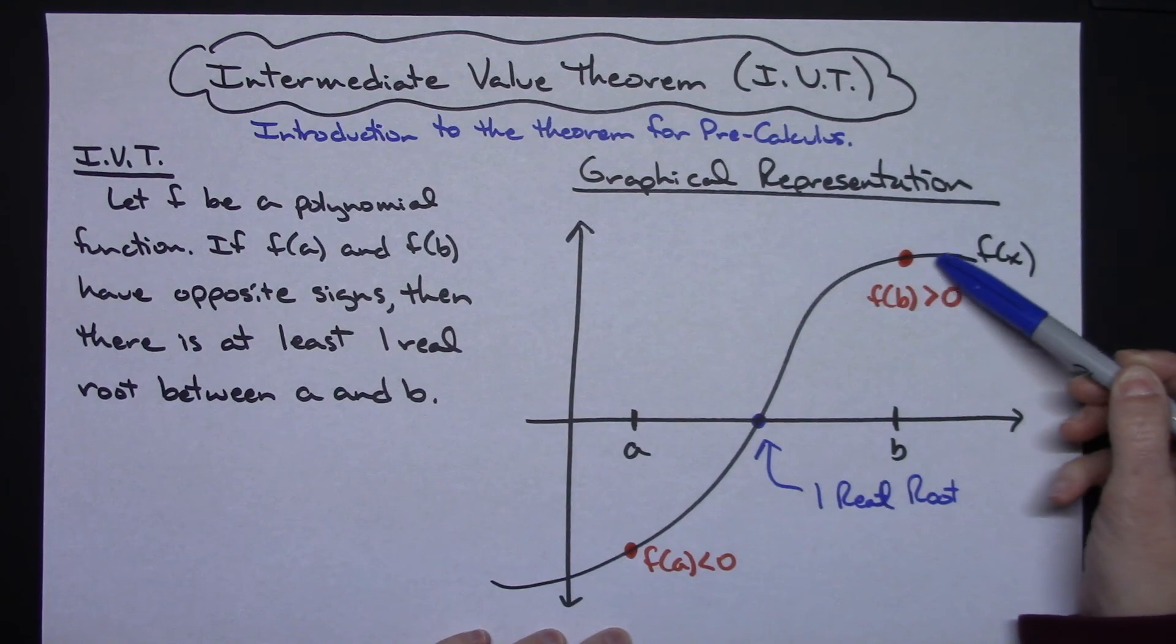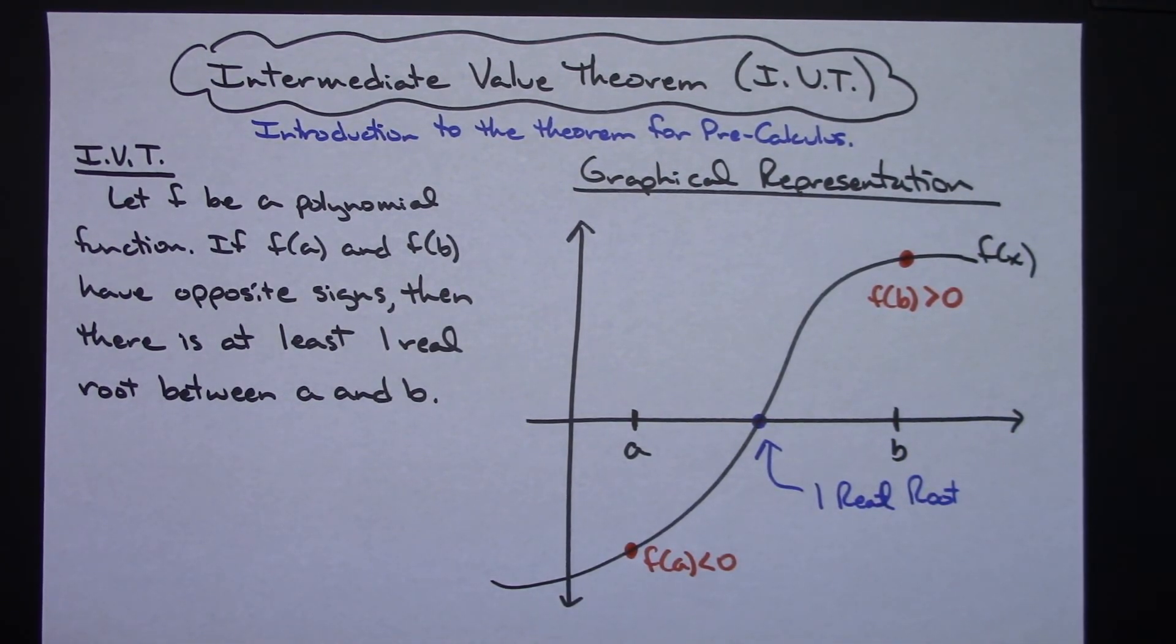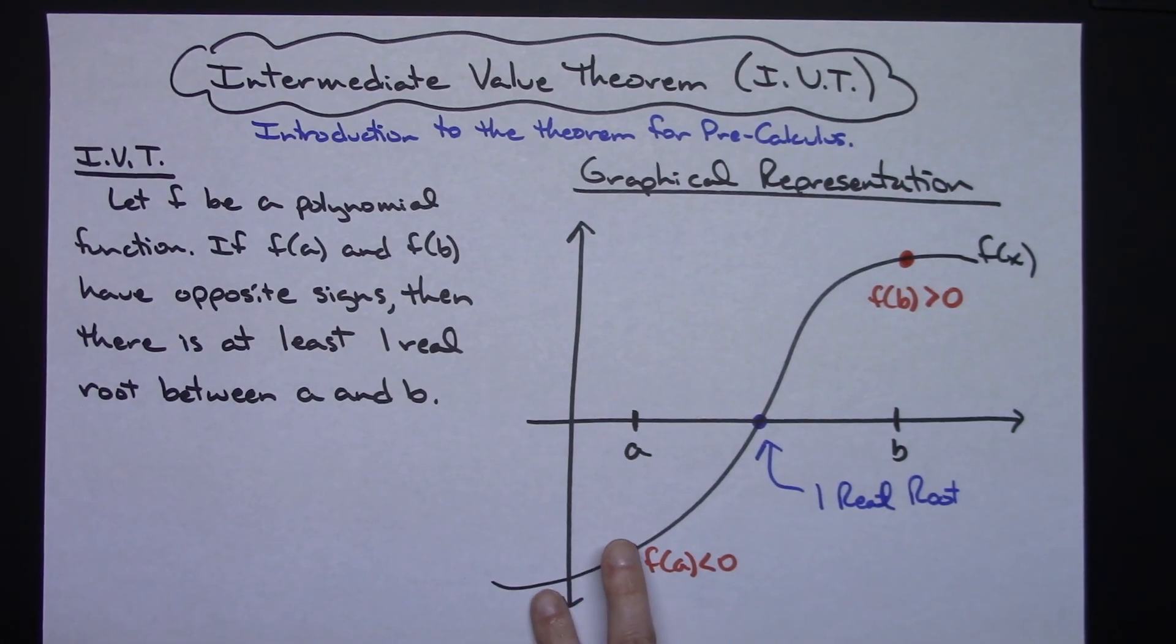However, there's nothing that says that this polynomial curve couldn't come up and then have some hills and valleys in here, cross multiple times, and then finish on up here, in which case it would have more than one real root.